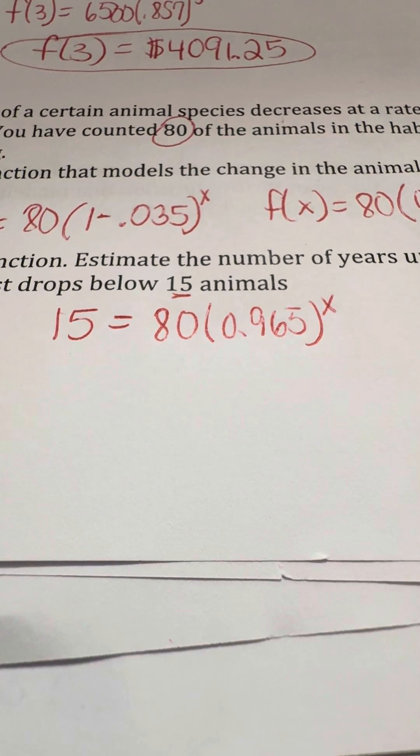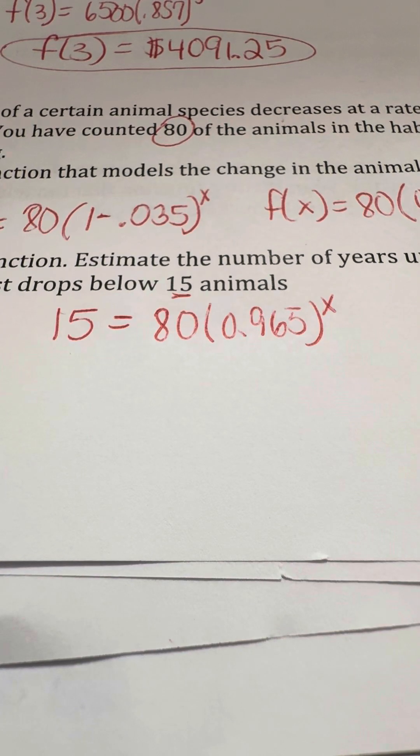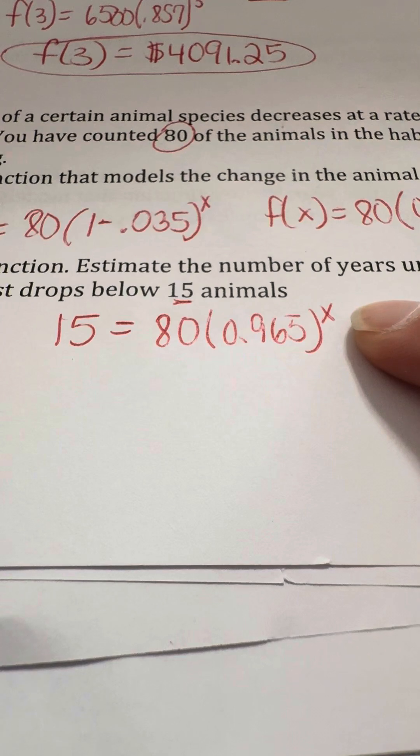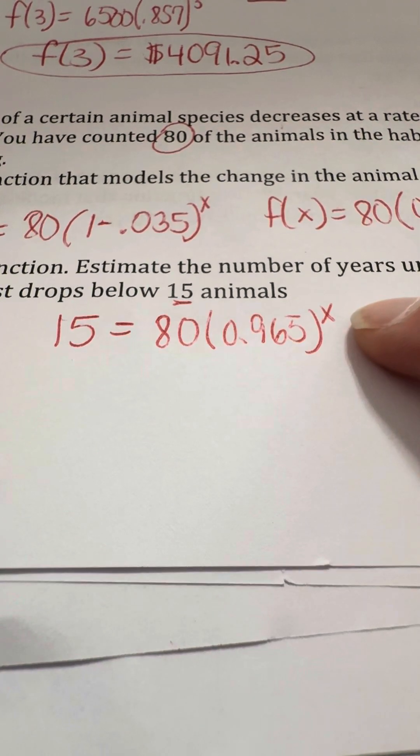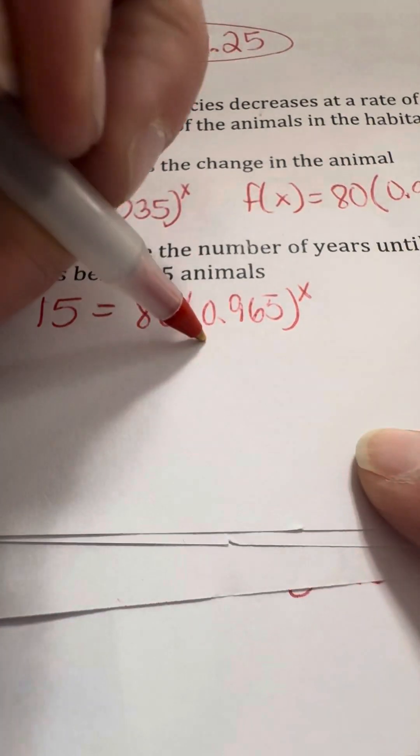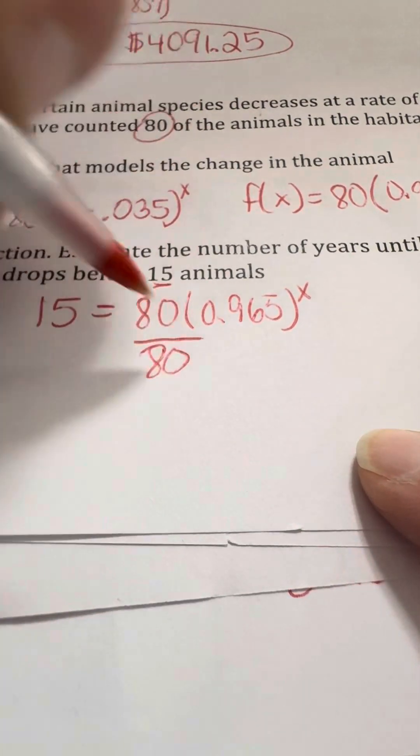Now, when you're dealing with trying to do this and undoing an exponential function to get x by itself here, we kind of do the same thing we normally would do with solving for x. But there's a slight variation at the end. Because this x isn't a regular size x. It's an exponent. So there's a little twist to this. So the first thing we would do is divide that 80 like we normally would. And we have multiplication here. So we do the opposite, which is to divide by 80. And we're going to do that on both sides.